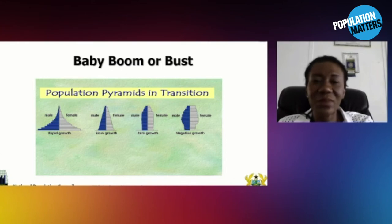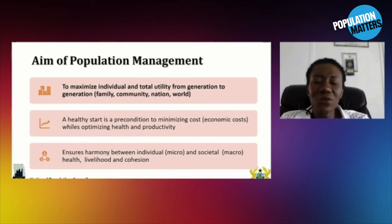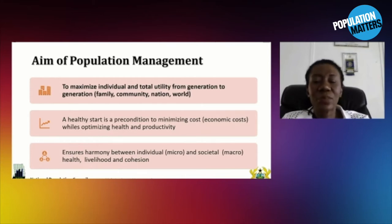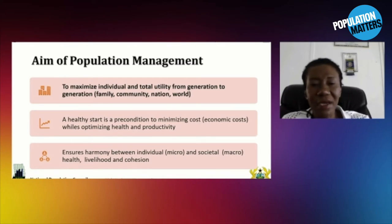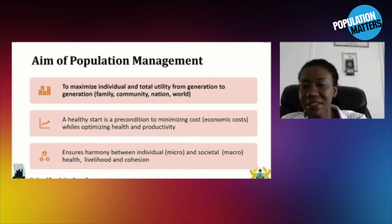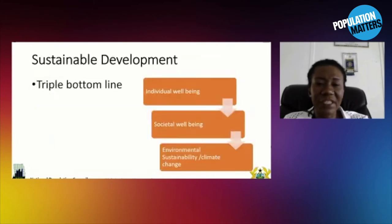That is why I am very excited with the theme: population boom or bust. The issue is socioeconomic development and where nations should stand. The aim of population management is really harmonization between individual and societal health with livelihood and cohesion. It always starts with a precondition: a healthy start is a precondition to minimizing costs — not just economic costs, but health costs, social costs, psychological costs — whilst optimizing health and productivity. The main outcome of effective population management is optimization of health and productivity, to maximize individual and total utility from generation to generation, not just one generation, but from generation to generation.